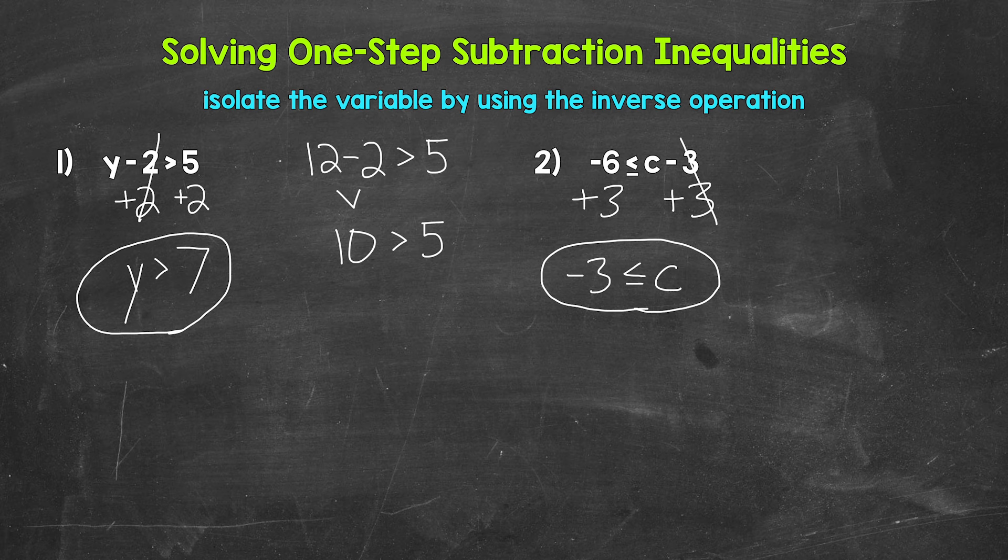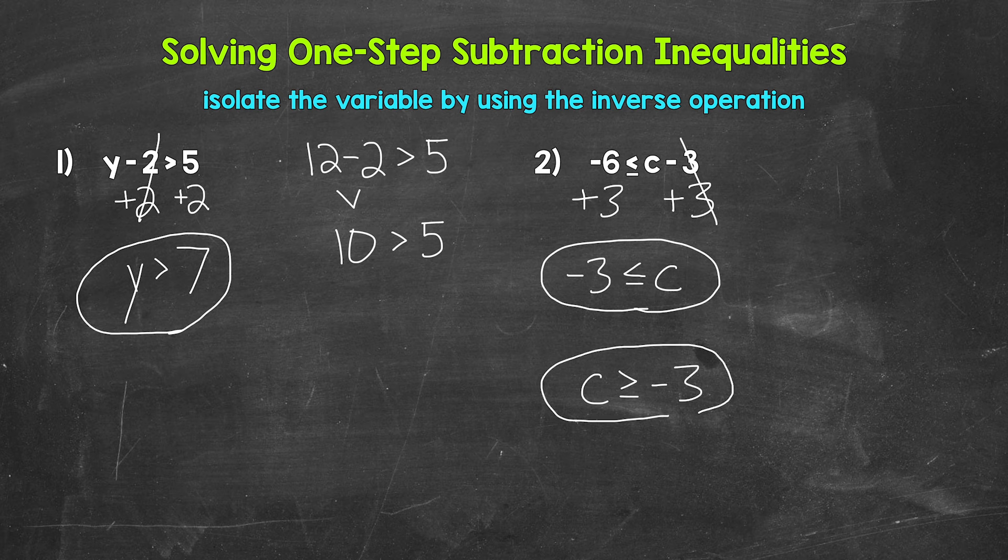One thing we can do here is rewrite the inequality with the variable coming first. It can make it easier to work with inequalities. So keep this in mind. And all we need to do is flip it. So we need our variable C and then our symbol we need to make sure is going the correct way. So it's opening up towards C. We need C to be greater than or equal to negative three. So again, we can rewrite this with the variable coming first if we prefer.